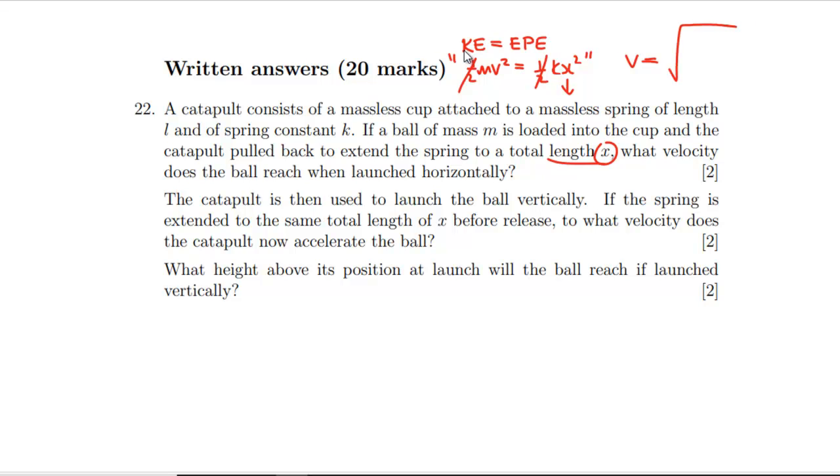So v is going to be the square root of k over m times (x-l)². We could put that out on the outside, so v equals (x-l) times the square root of k over m. The only tricky thing there is to take care with what that x actually means - total length.